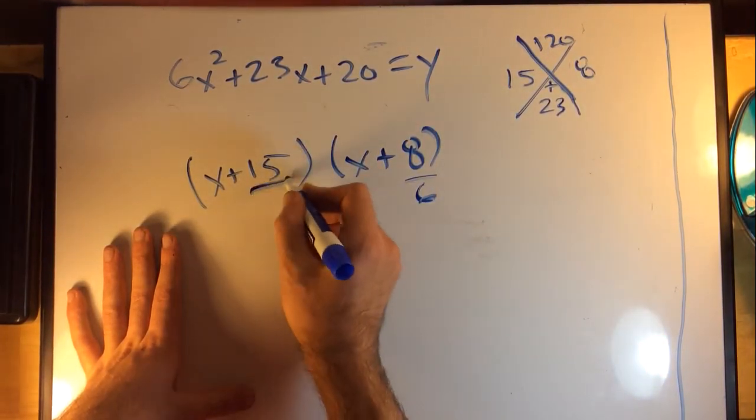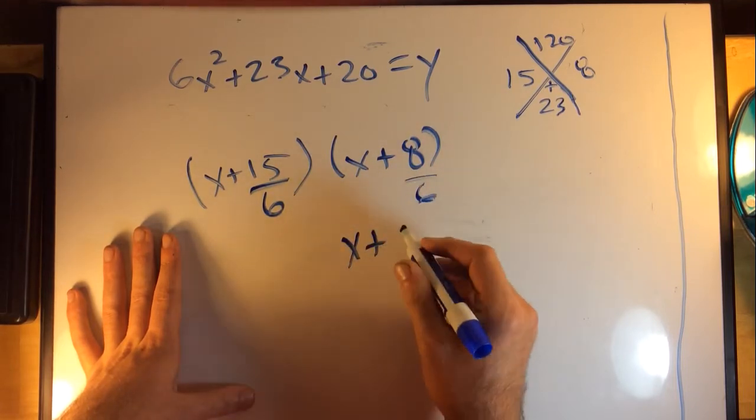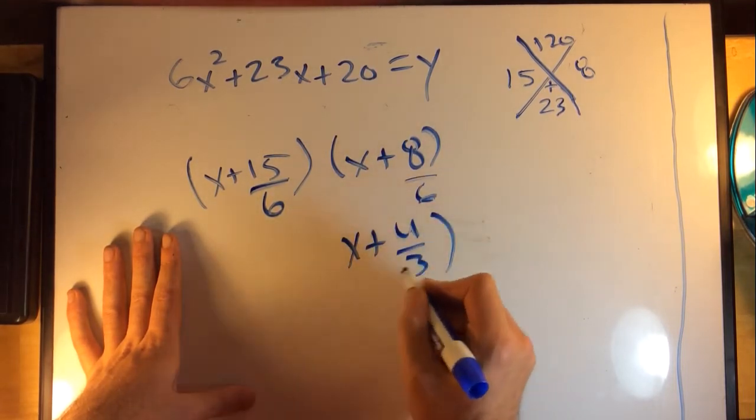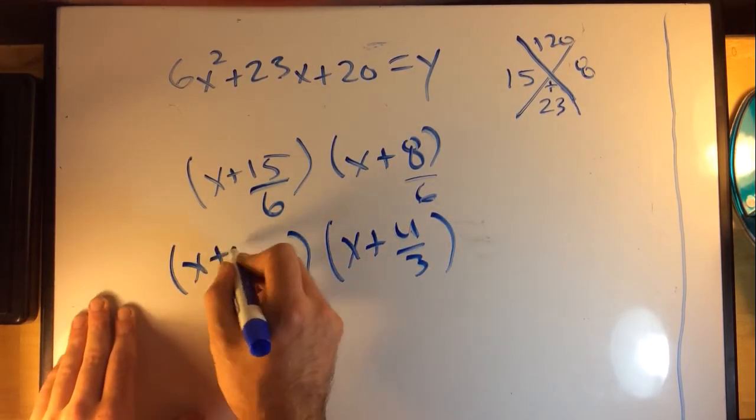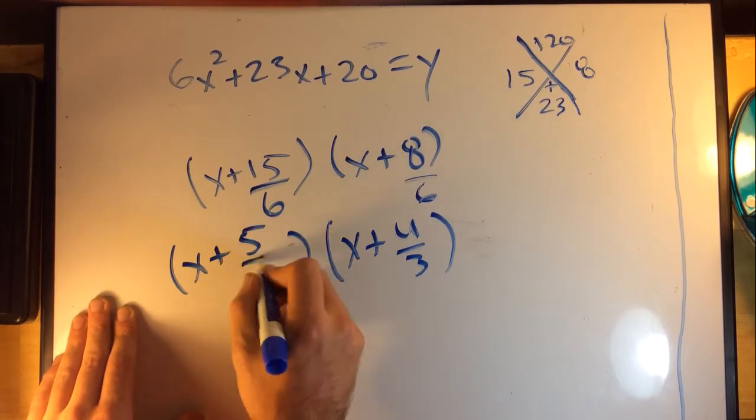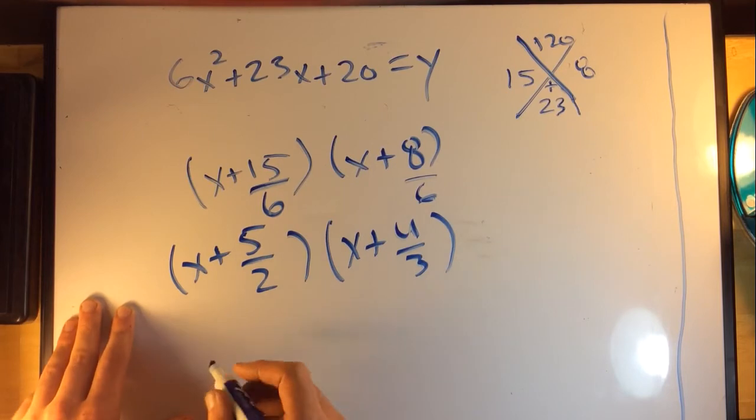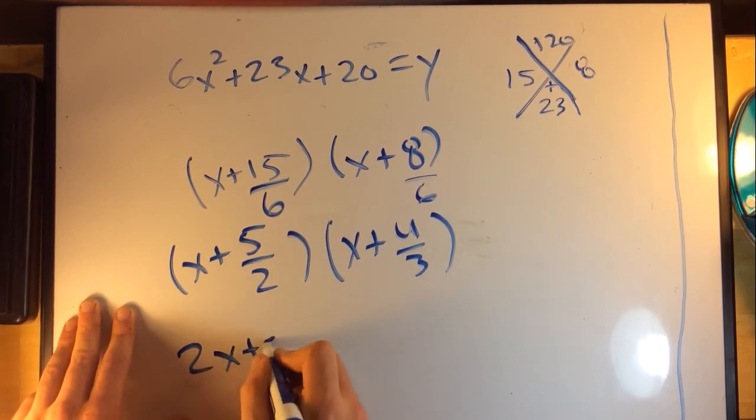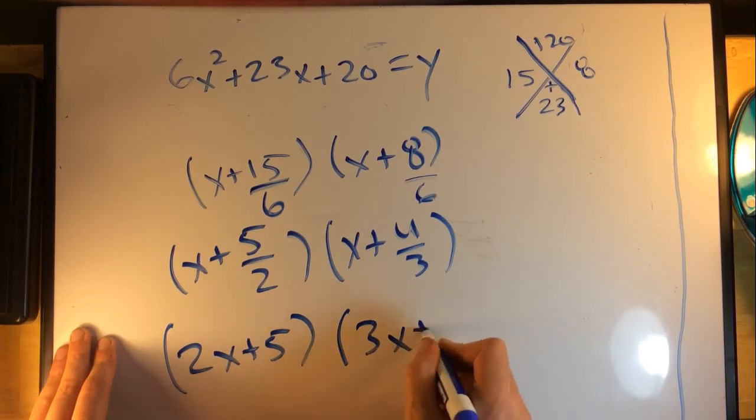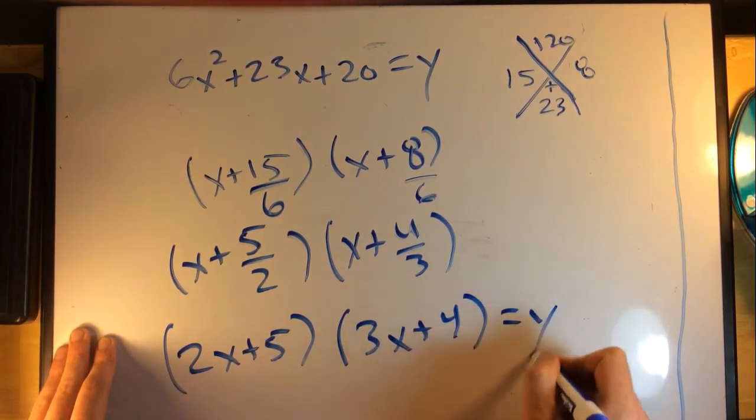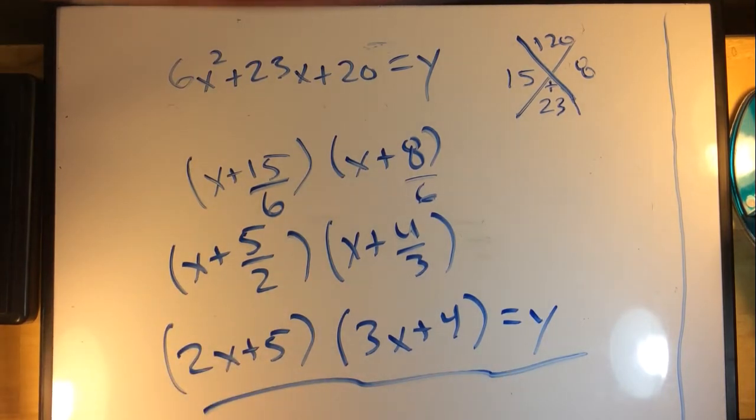Let's simplify that: (x + 5/2)(x + 4/3). Then you can just slide over your 3, slide over your 2, and you get (2x + 5)(3x + 4) = y. Now this is in factored form, you did it pretty simply.